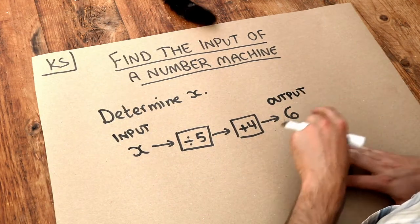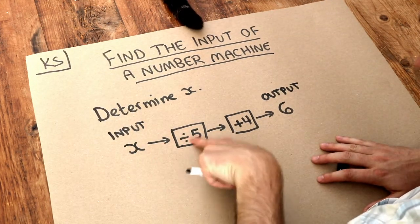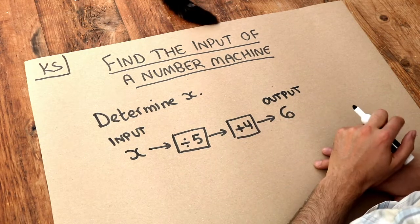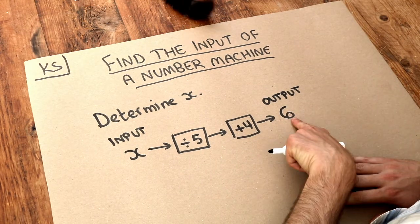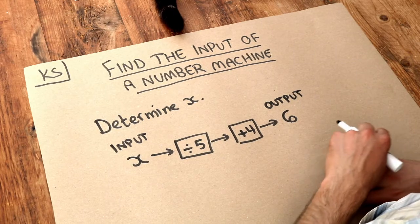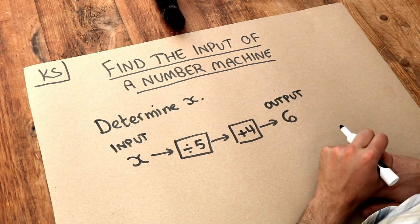Now it's relatively easy if you're given the input and you just have to put it through these operations to work out what the output is. It's a bit harder if you're given the output and you have to work out the input. And all we need to do is just work backwards.